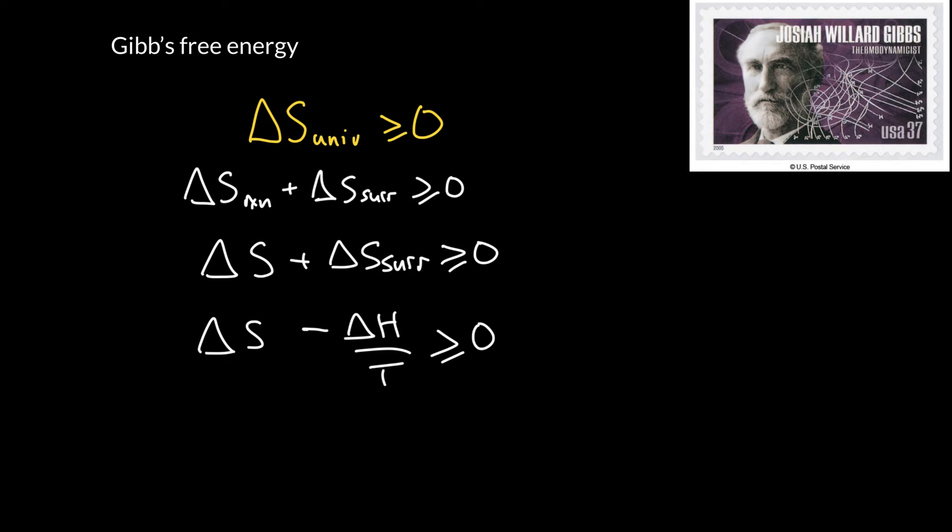Let's multiply this by minus T. And remember that the thermodynamic temperature is always positive, so if we multiply by minus T, we will flip the sign. And that allows us to rewrite this equation as delta H minus T delta S is always less than or equal to zero.